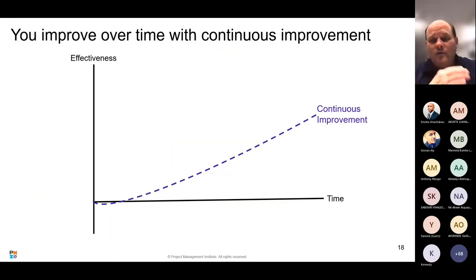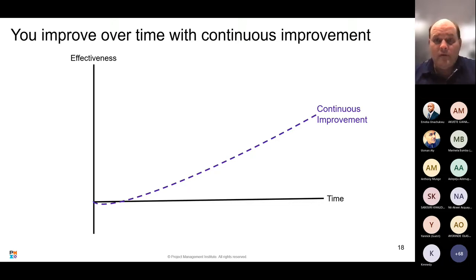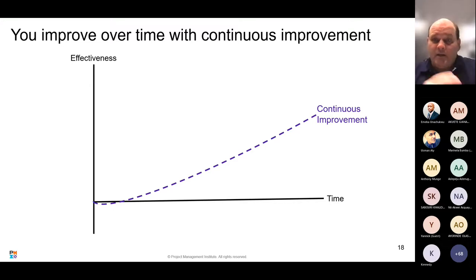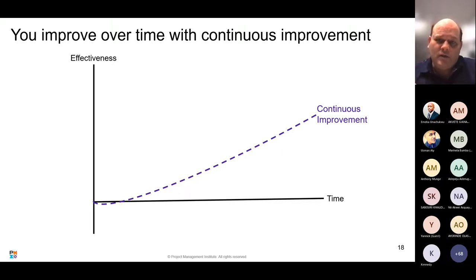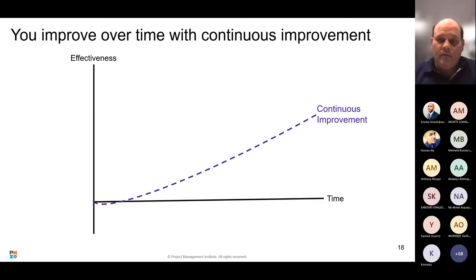How well does this work? The apex predators — companies like Amazon — have been on the continuous improvement path for a couple of decades. They've learned how to learn; they are a learning organization. They enjoy an improvement curve that just keeps going up. What's also interesting is they're still improving — they're deathly afraid of somebody catching up. They've built continuous improvement right into their culture.